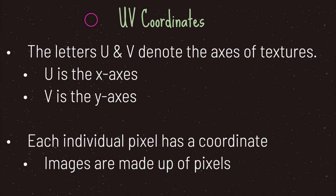The UV coordinate system takes the letters U and V to denote the axes of your texture. Think of U as your X axis and V as your Y axis.